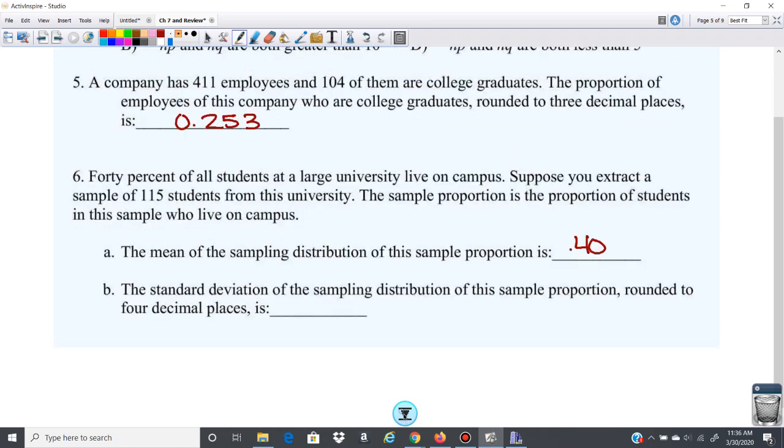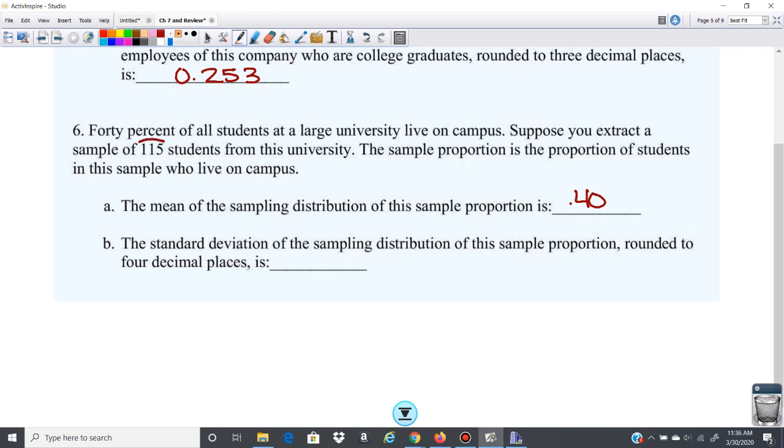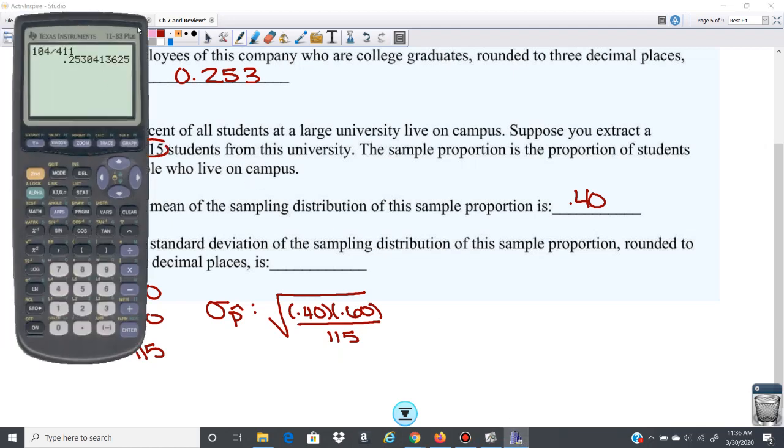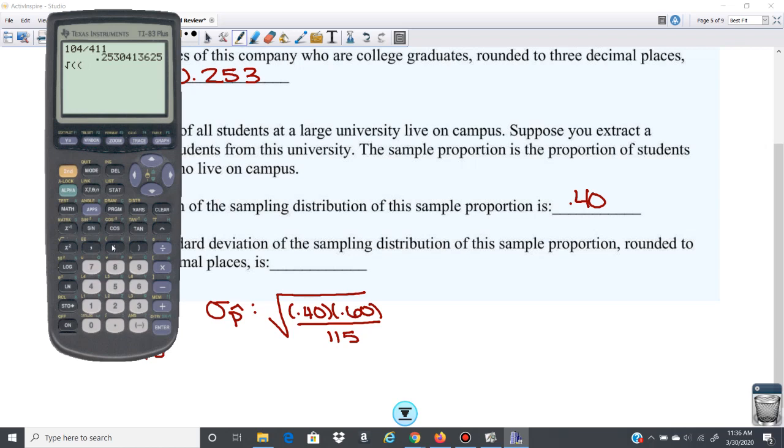The standard deviation of the sampling distribution rounded to four decimal places. So now you have your sample size. So you want your standard deviation. If your mean is 0.40, that's your P, your Q is 0.60, and your N is 115. So our formula again, standard deviation of P hat is the square root of P times Q over N. So let's go ahead and do that. We have the square root of 0.4 times 0.6, divided by 115. We get 0.0457.